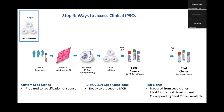ReproCell doesn't require you to get the entire process from them — you can get whatever you need at any step. You can get donor tissue, reprogramming and a seed bank, clone isolation, QC testing only, or early pilot clones for research use and come back later for an MCB. I recommend talking to ReproCell colleagues to see which approach works best for you.